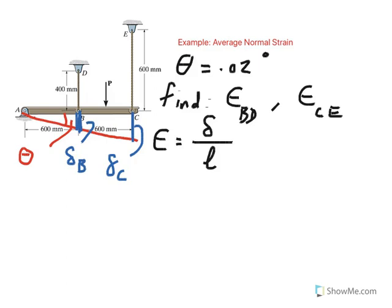So here using the geometry, it is obvious that tangent of the angle theta is the ratio of opposite divided by adjacent. So the opposite here, if you just look at this triangle here, that would be delta B divided by this adjacent, which is 600 millimeters.